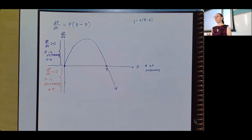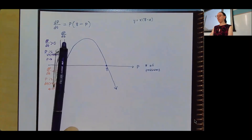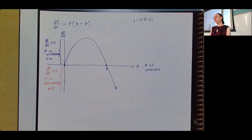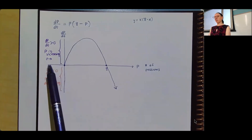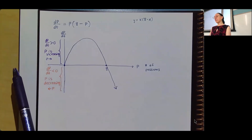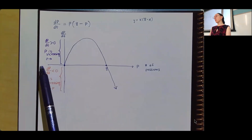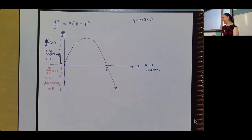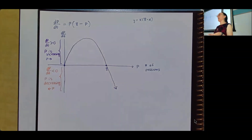By the way, I have stopped the graph at zero on the p-axis. The reason is that p is defined as the number of possums, and I don't really know what negative possums would be — maybe zombie possums — but if we're counting a biological population, I'm not going negative on that.